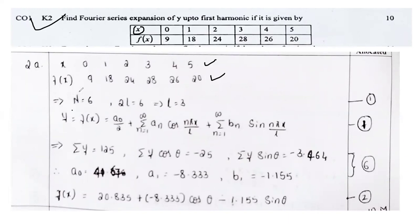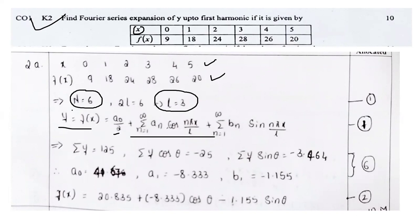First, count the number of samples: n equal to 6. Then 2L equals 6, so L equals 3. This is a standard procedure. Write the general Fourier series: y equals f(x) equal to a0 by 2 plus sigma n equal to 1 to infinity a_n cos(n pi x by L) plus sigma n equal to 1 to infinity b_n sin(n pi x by L). L is already computed as 3.